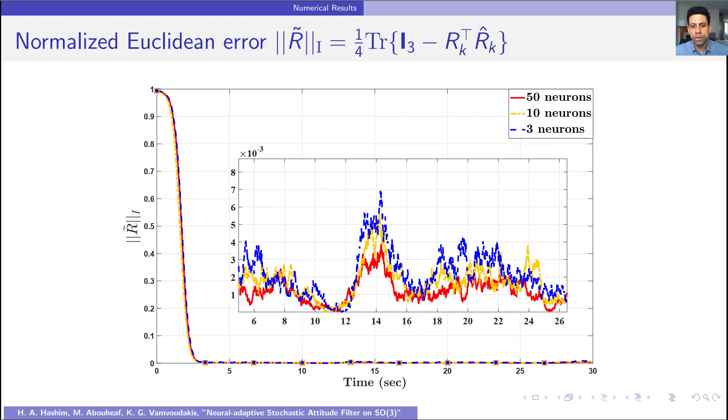This figure also illustrates the error in normalized Euclidean distance attitude error. However, in this figure we considered the difference in tracking using three neurons, 10 neurons, and 50 neurons. As we can see, more number of neurons lead to better tracking performance. However, of course with more computational requirement.